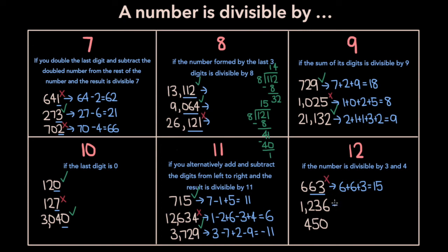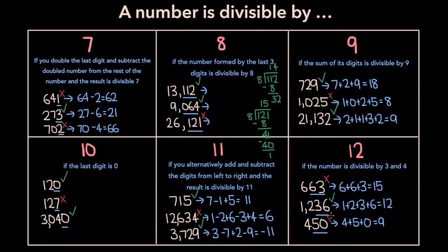Now for 1,236, to check if it's divisible by 3, we sum up the digits: 1 plus 2 plus 3 plus 6, which is 12. 12 is divisible by 3 — 12 divided by 3 equals 4. Now we have to check if 1,236 is divisible by 4 by looking at the last two digits. We get 36. 36 is divisible by 4 — 36 divided by 4 equals 9 — and so 1,236 is divisible by 12. For the number 450, summing the digits: 4 plus 5 plus 0 equals 9. 9 is divisible by 3. But the last two digits form 50, and 50 is not divisible by 4, which means 450 isn't divisible by 12.